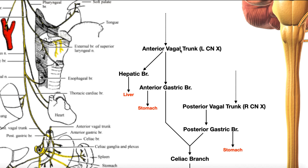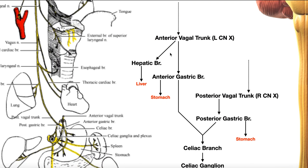The anterior vagal trunk gives off a couple of branches. The first one is a hepatic branch, which serves the liver, providing parasympathetic action there. Parasympathetic function for this region is your rest and digest, so the liver will be stimulated by the vagus nerve. Another branch coming off the anterior vagal trunk is the anterior gastric branch, which supplies the anterior part of the stomach mostly. The anterior gastric branch is also going to give off another major branch, which we'll come back to in a moment.